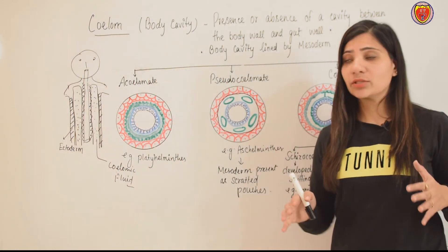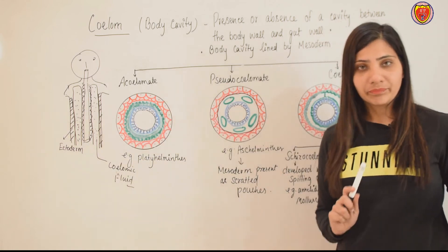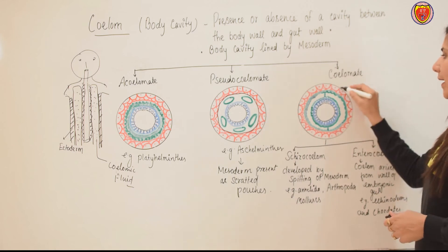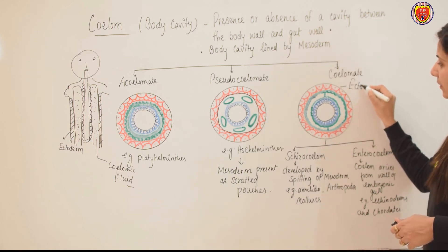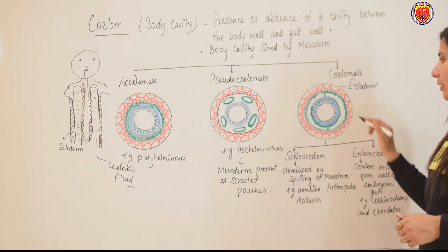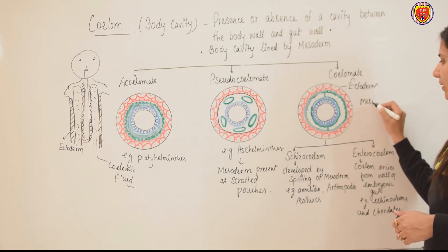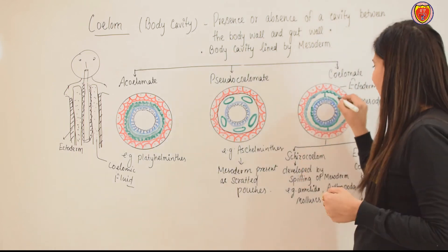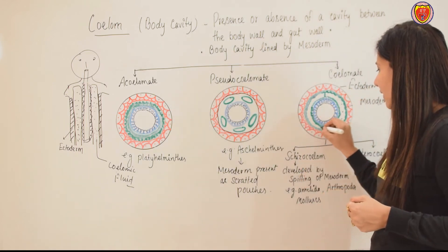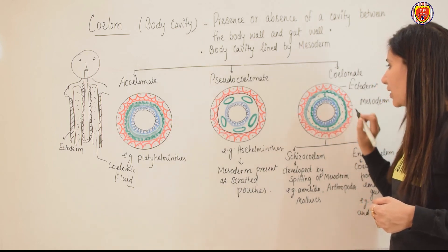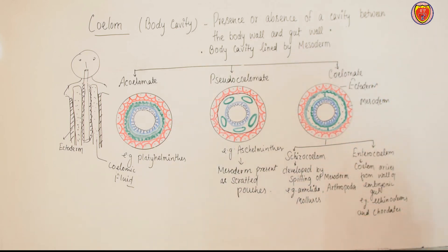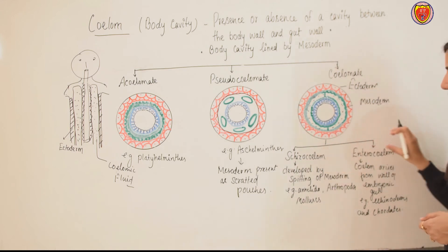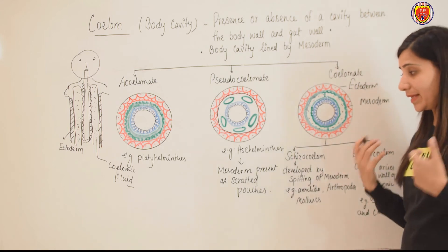Next is the coelomate — this is the actual coelomate. The red color is ectoderm, the green color is mesoderm. The mesoderm has divided, and this cavity is a coelom or body cavity. The mesoderm-lined cavity is called a coelom. These coeloms are of different types — schizocoelom and enterocoelom, which are different from each other.